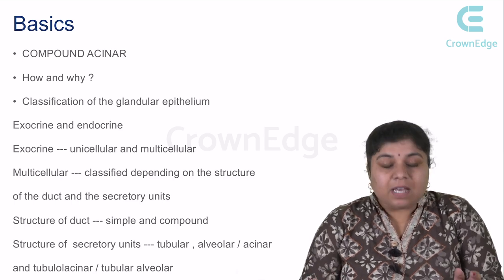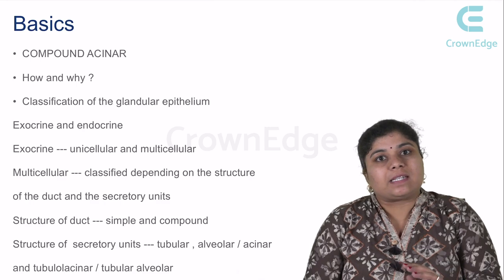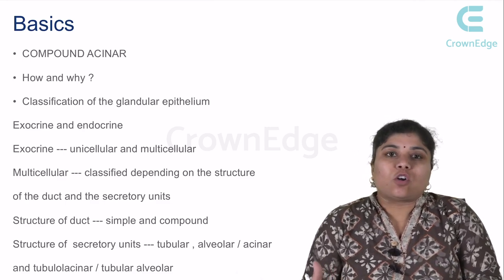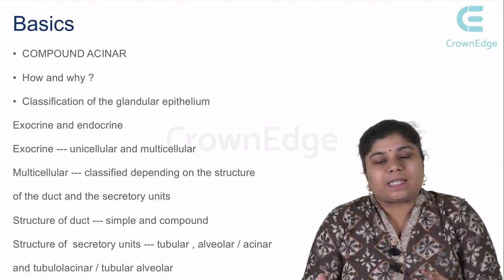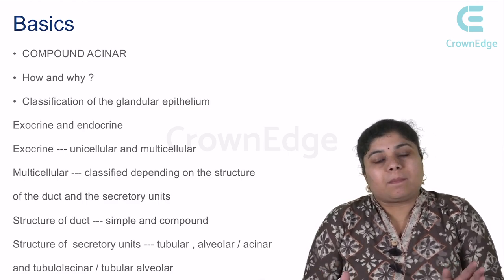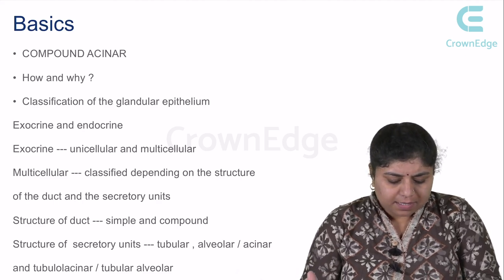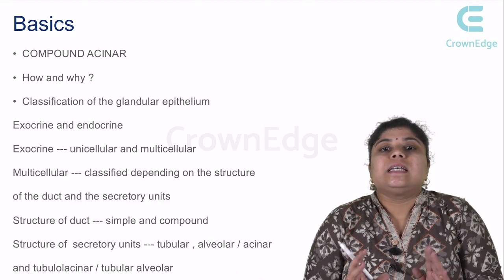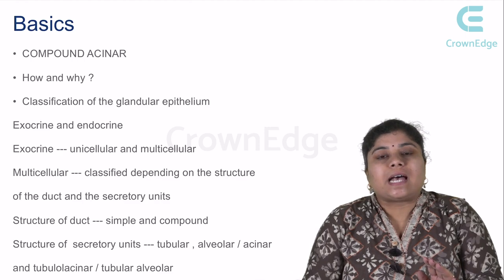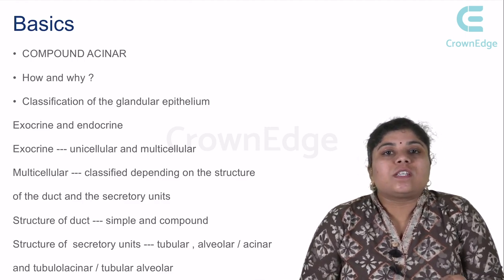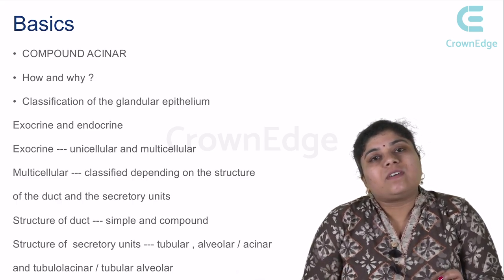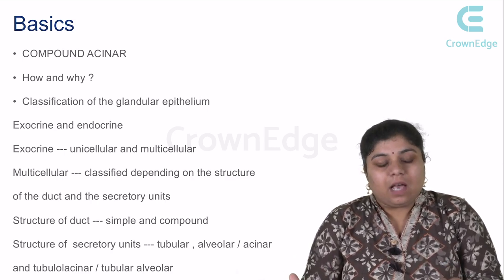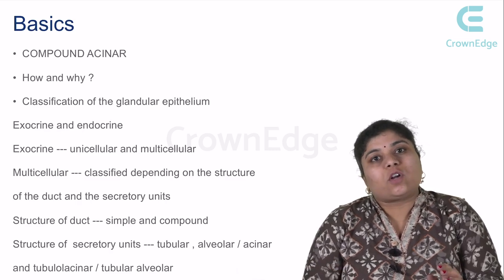Exocrine glands can be further classified depending on whether a single cell or multiple cells are involved. When a single cell is involved, like a goblet cell, it is not complex. Multicellular glands have two main compartments: the secretory units and the ducts. Depending on the structure of the duct — branched or unbranched — it is a compound or simple gland. The secretory units can be tubular, alveolar/acinar, or a combination called tubuloacinar.